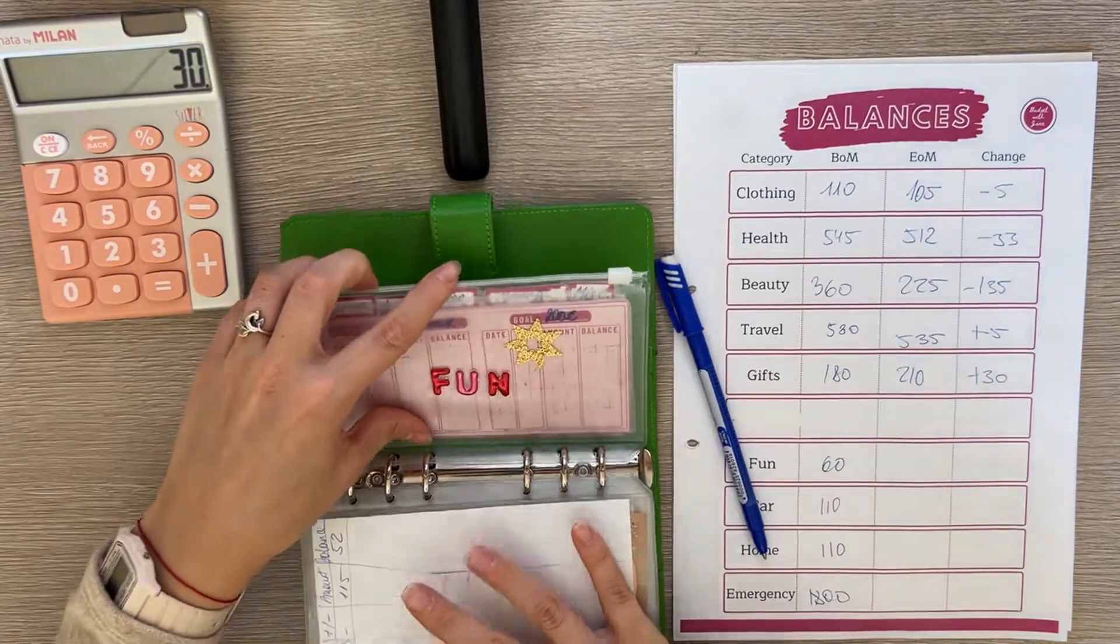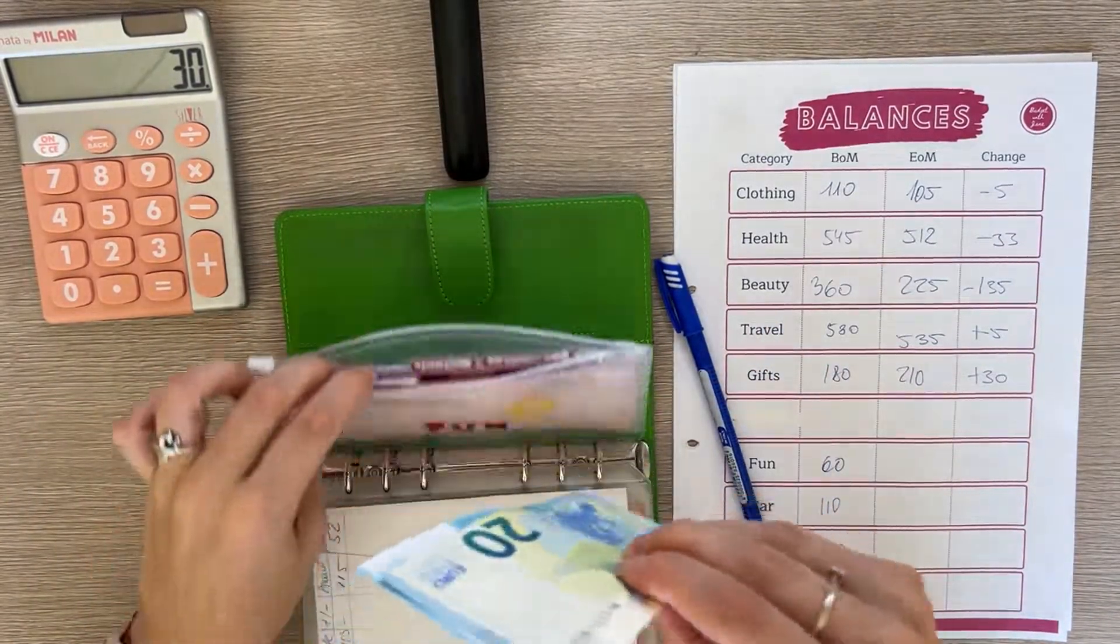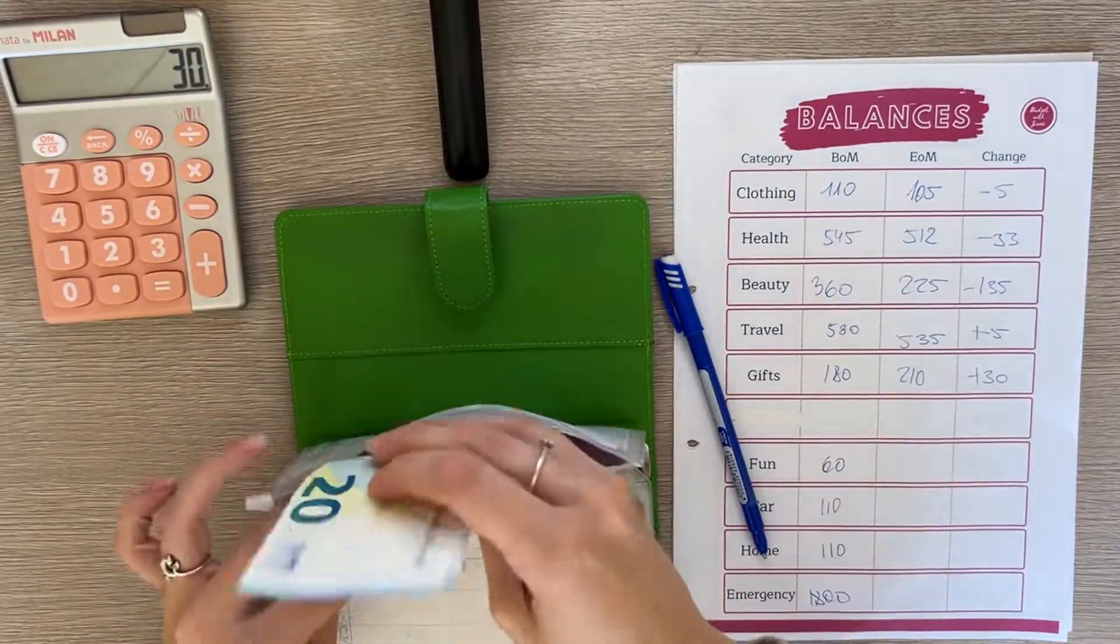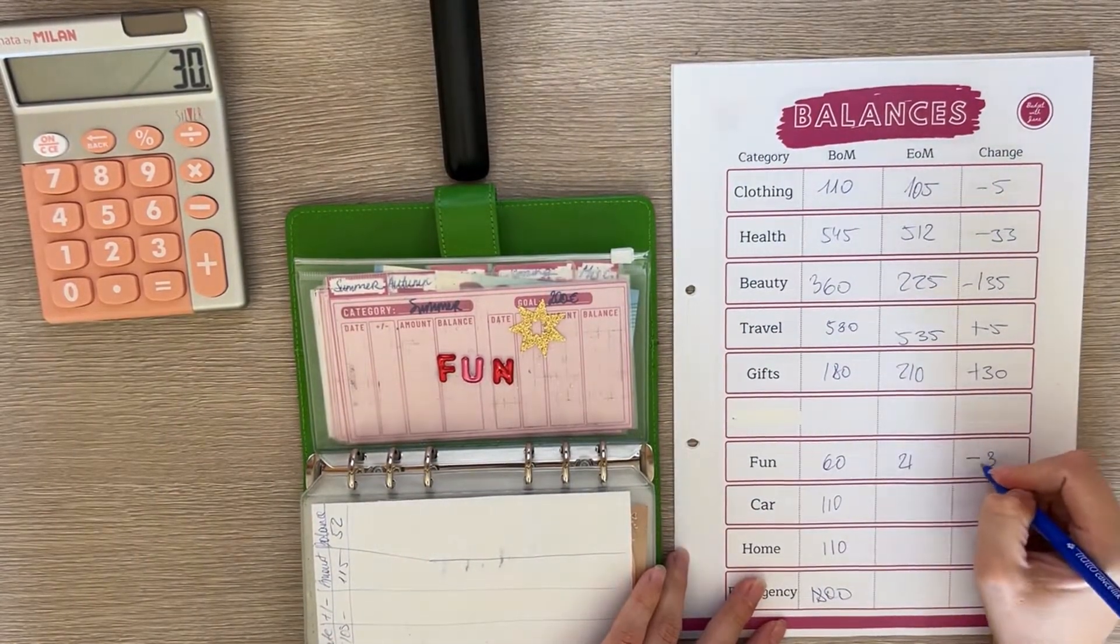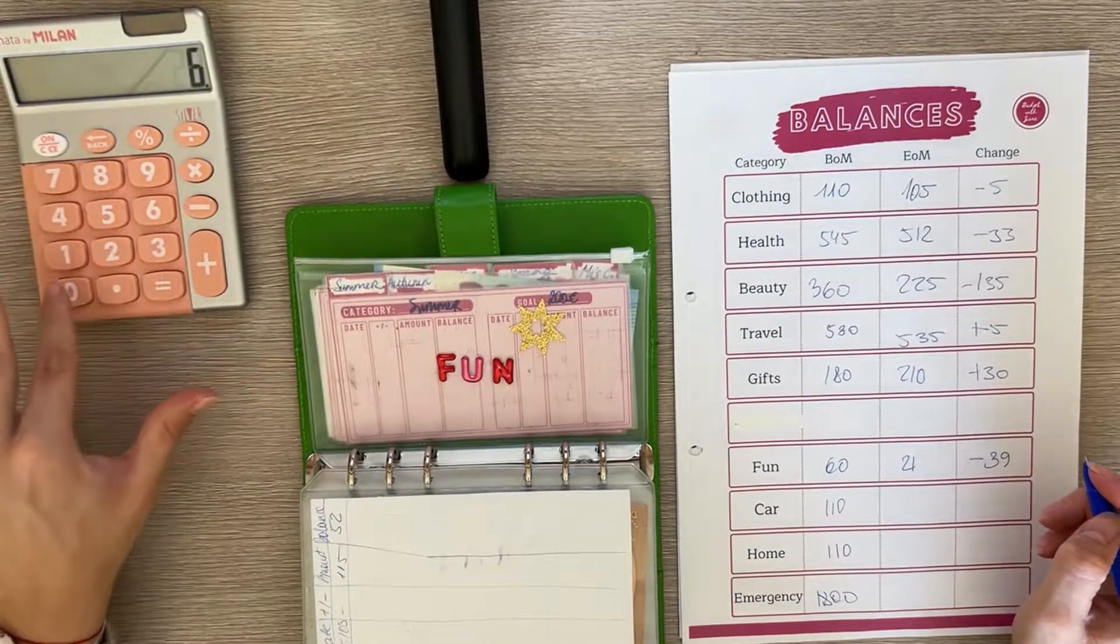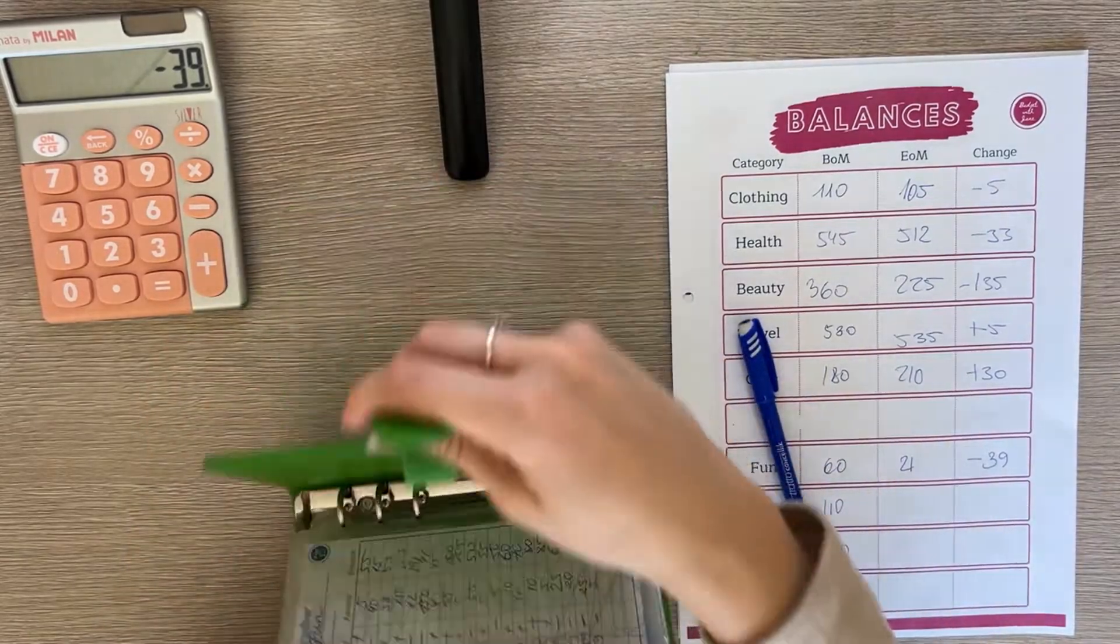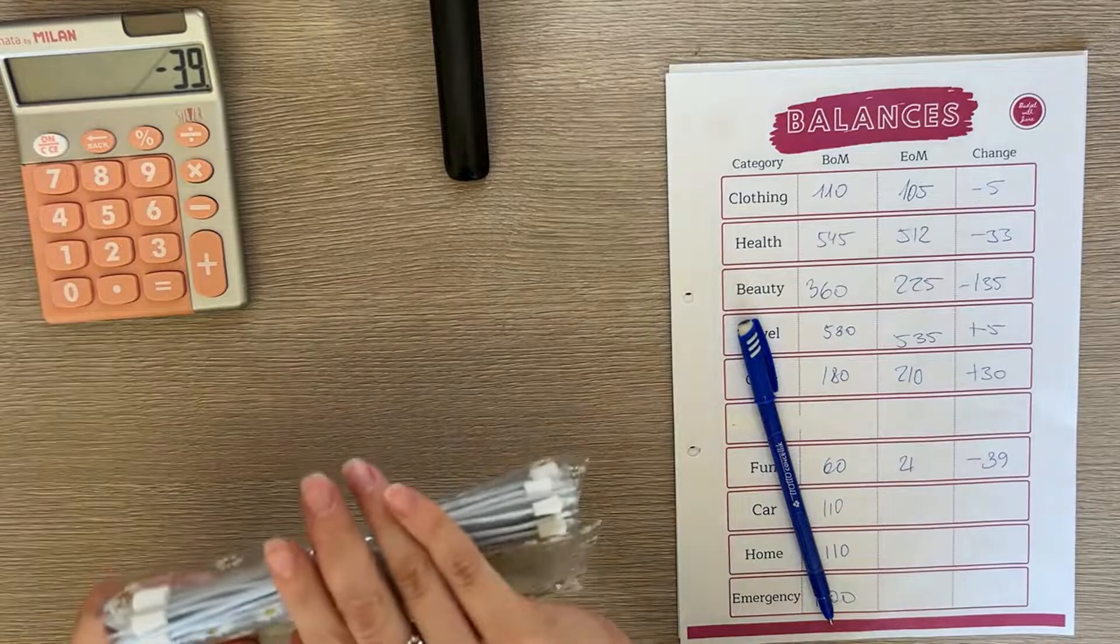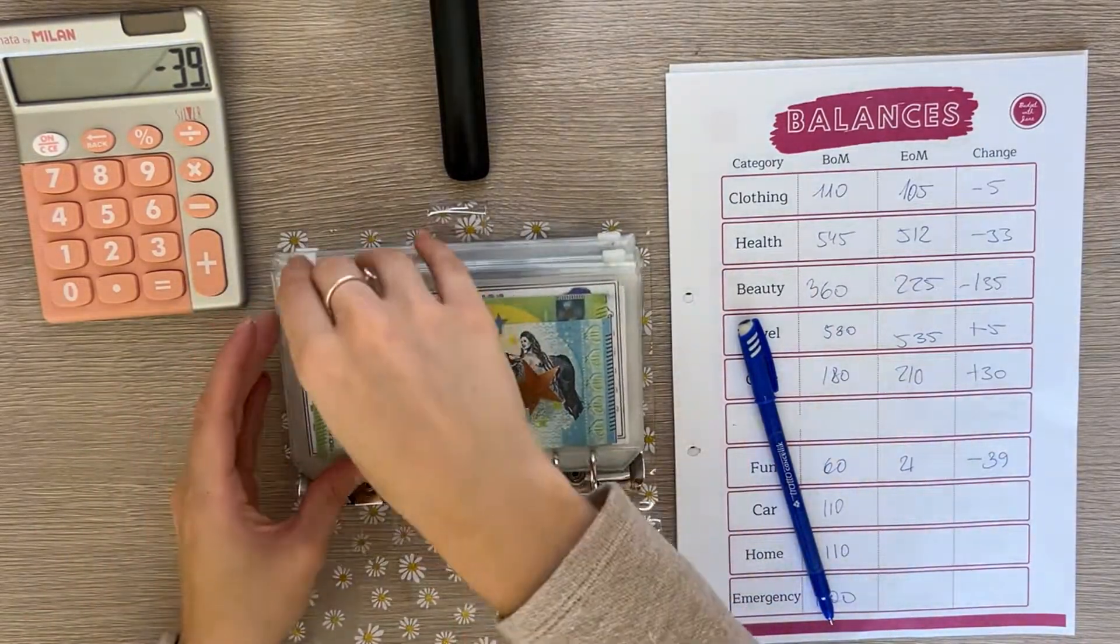Next is rollover but I don't count this because I use it for my cash envelopes and it's just repetitive. Fun only has money in autumn and it has 22 and we spent a lot in here so it's a negative 39 difference.